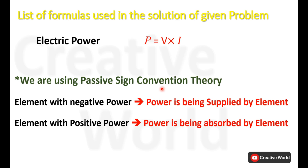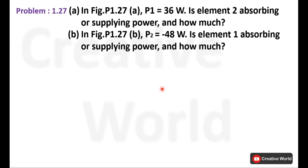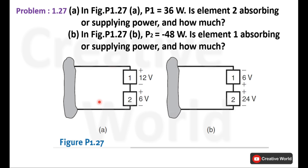An element with positive power will be considered as a power absorber. First, read the scenario. This scenario is given in two parts. Part A: in figure 1.27a, P1 is 36 watts — element 1 has 36 watts. Is element 2 absorbing or supplying power, and how much? In Part B: in figure 1.27b, P2 is minus 48 watts — element 2 power is minus 48 watts. Is element 1 absorbing or supplying power?